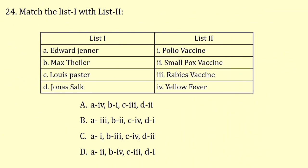Match list 1 with list 2. Edward Jenner found the vaccine for smallpox. Max Theiler found the vaccine for yellow fever. Louis Pasteur found the rabies vaccine. Jonas Salk found the polio vaccine. The correct answer is option D.